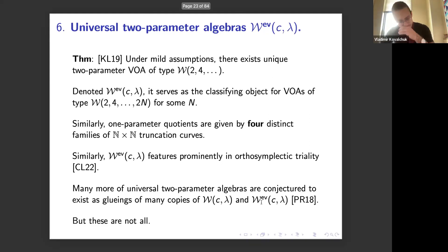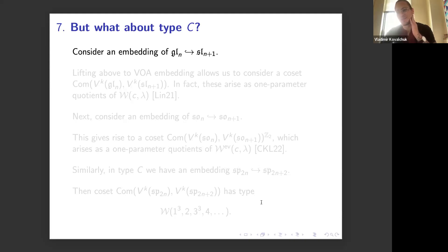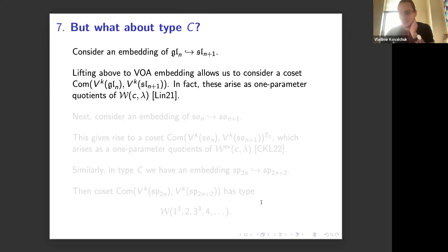There are many more universal two-parameter vertex algebras conjectured to exist. Consider an embedding of GL_N into SL_{N+1}: you lift it to a VOA embedding, take a coset, and these algebras arise as one-parameter quotients of the W-infinity algebra — that is a theorem. You can do the same thing in type BD: take SO_N inside SO_{N+1}, take a coset, and also take a Z2 orbifold for technical invariant theory reasons. One can then show this coset arises as a one-parameter quotient of the even-spin algebra.